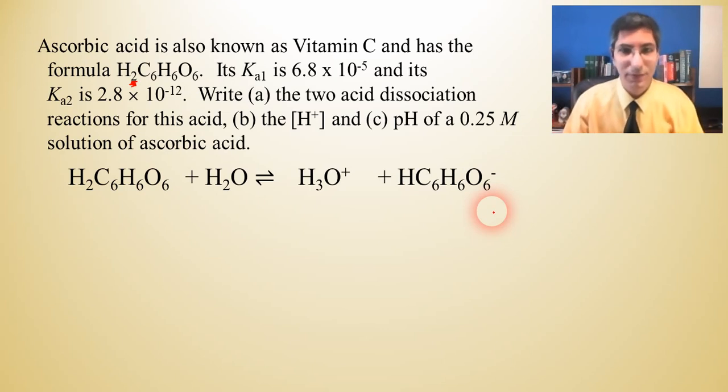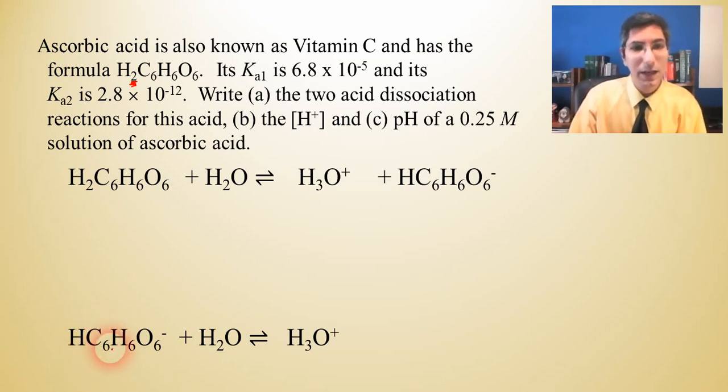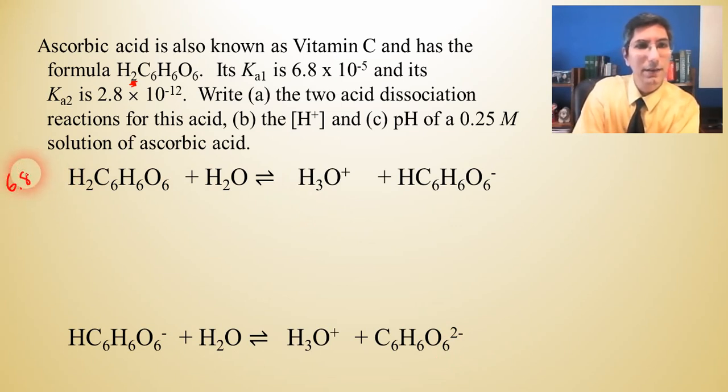Now what about the second one? Well, we're going to take this same product, this HC6H6O6-, and we're going to do the same thing with this, except we're going to have the second hydrogen pop off. So it's going to react with water. We're going to make some hydronium. And this time, what's the conjugate base of this stuff here? Well, it's C6H6O6 with a -2 charge. So notice we have two separate acid dissociations. That's why we have two separate Ka values. The Ka1 is right here. The Ka for this reaction is 6.8 times 10 to the negative 5th. The Ka for this reaction down here is much smaller. It's 2.8 times 10 to the negative 12th. Now we have part A done.